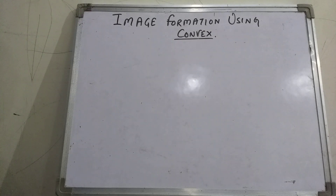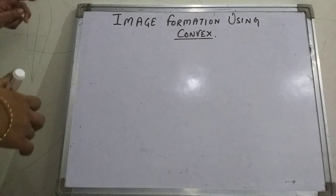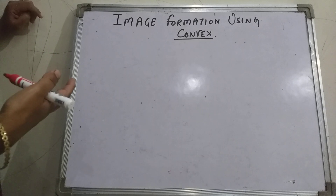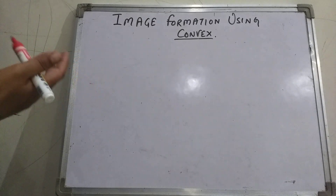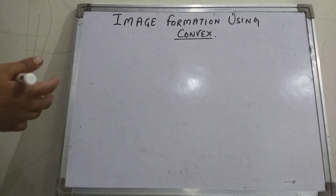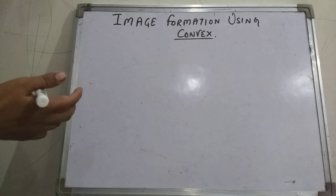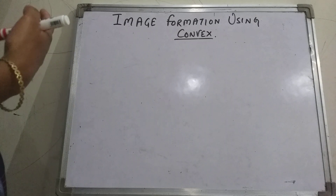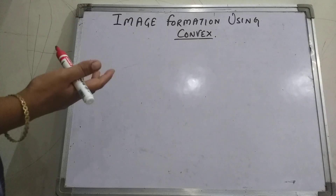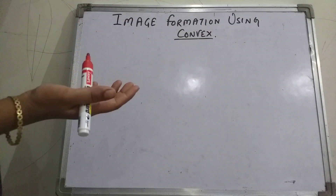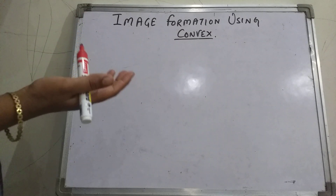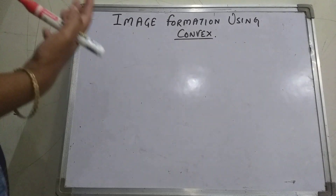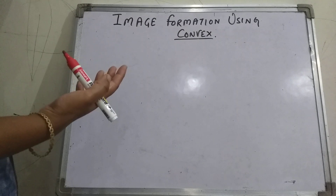In the case of convex, as we have gone through the concave, the rules are the same. The only difference is that in case of concave, focus and center of curvature are lying on the left side of the mirror, so they are real. But in case of convex, your center of curvature and focus are lying on the right side of your convex mirror — that is on the back side of the mirror. Hence, they both are imaginary in this case.